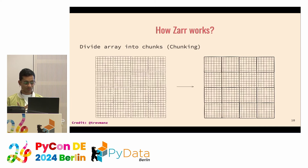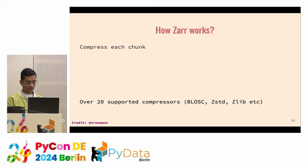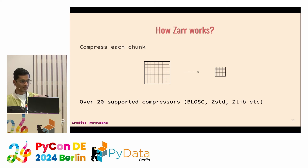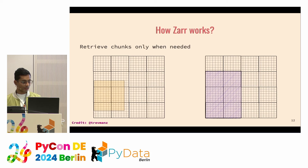What Zarr does is divide the big array into small equal parts. This process is known as chunking, and the small equal parts are known as chunks. We then compress each individual chunk using state-of-the-art compressors from various organizations. There's a library known as NumCodecs, which is a dependency of Zarr hosted in the Zarr developer GitHub organization, and it helps compress all these small chunks. When your array is compressed and divided into small parts, it's basically a Zarr array.